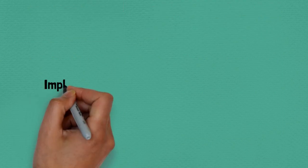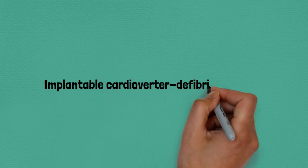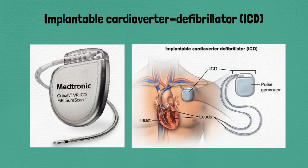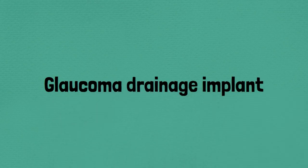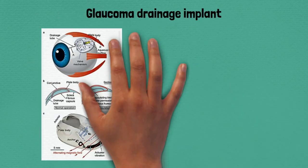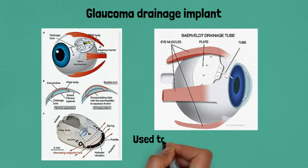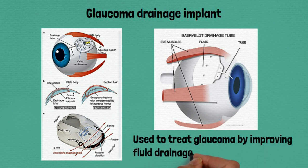Ninety: implantable cardioverter defibrillator, monitors and corrects abnormal heart rhythms. Ninety-one: glaucoma drainage implant, used to treat glaucoma by improving fluid drainage from the eye.